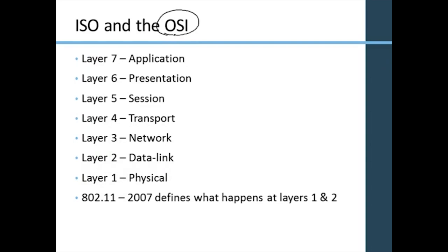I want to talk about the OSI model, the Open System Interconnect. We generally draw a line and talk about upper layers and lower layers. I'm not going to spend a lot of time on the upper layers - that's a bit outside of scope. But starting at layer seven, the application layer: that's basically any time we interact with the operating system - things like web browsing HTTP, FTP for file transfers, wherever we as people are interacting with the operating system.